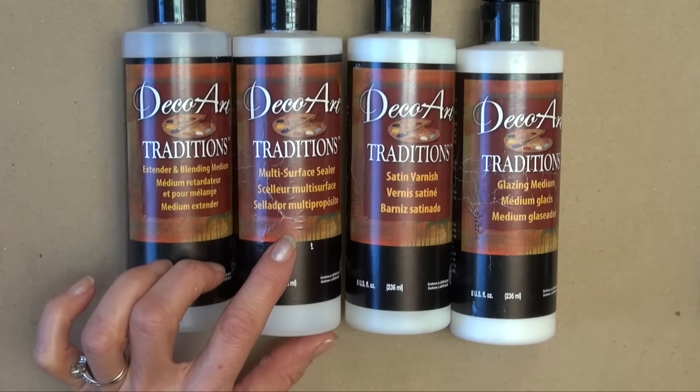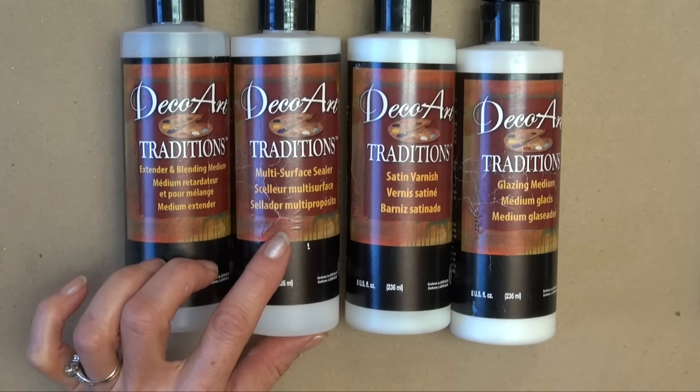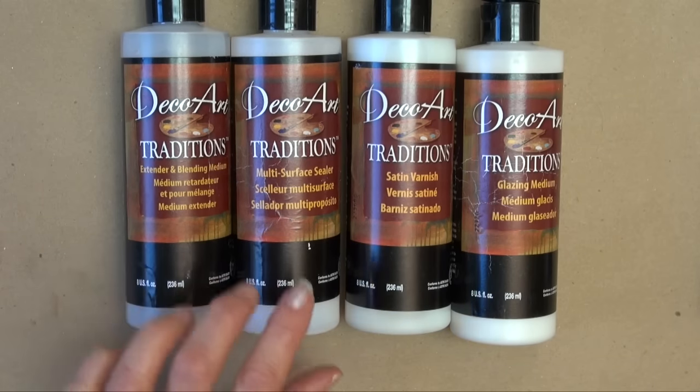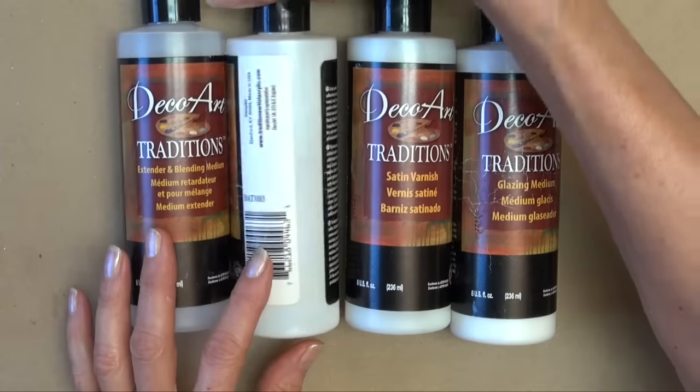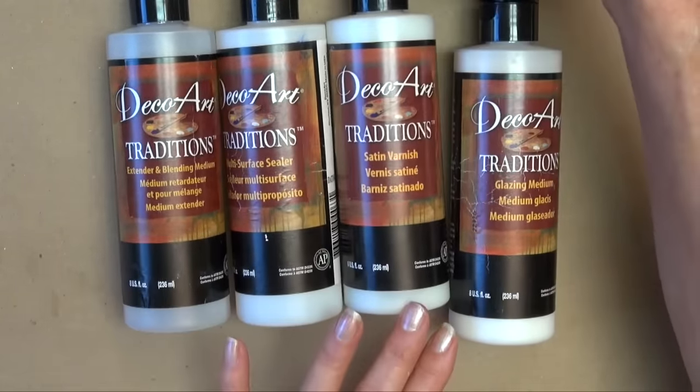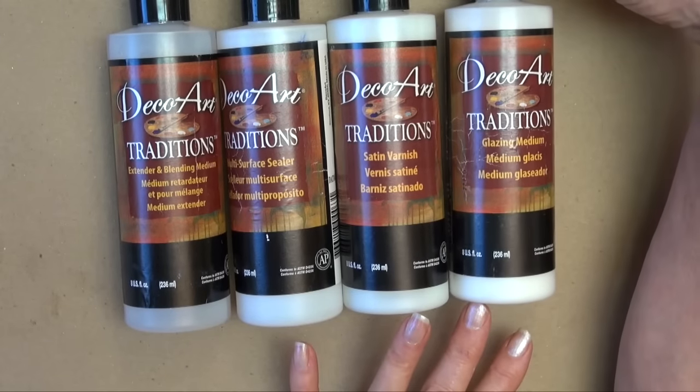We've got the multi-purpose sealer that can be used on wood, glass, also tin, metal, and it does say on the back some of the uses for these. We've got the satin varnish and some glazing medium.